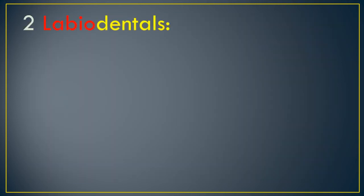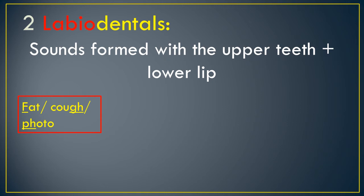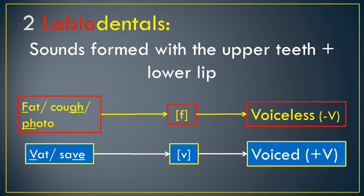The second place of articulation is labiodentals. These are sounds formed with the upper teeth and the lower lip. We have /f/ like in 'fat,' 'cough,' or 'photo,' represented by the /f/ symbol, and because there is no vibration, this is voiceless. We also have /v/ like in 'vet' or 'save,' which is voiced. So in labiodentals, we have two sounds: /f/ which is voiceless and /v/ which is voiced.